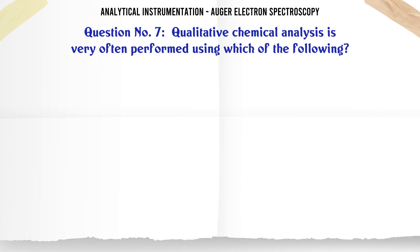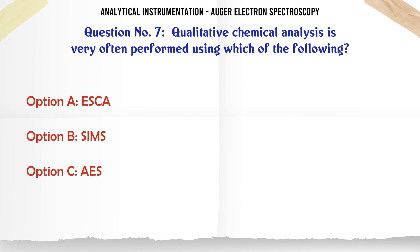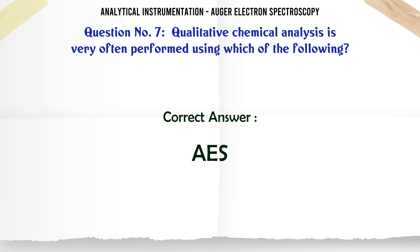Qualitative chemical analysis is very often performed using which of the following? A. 2S CA. B. 2S CA. C. 3D ion spectroscopy. The correct answer is 2S CA.